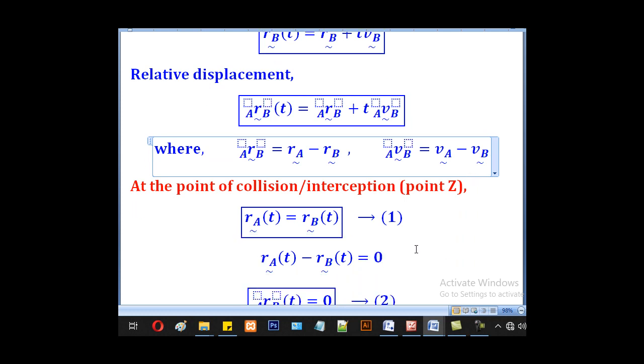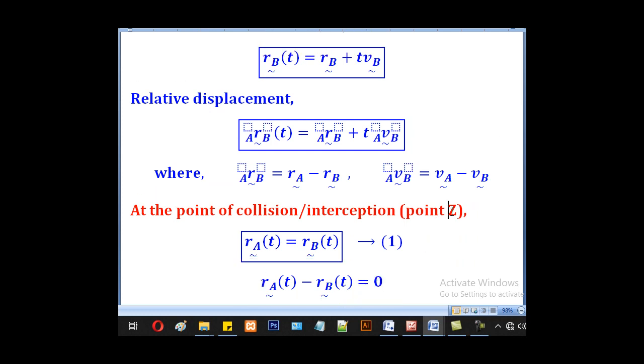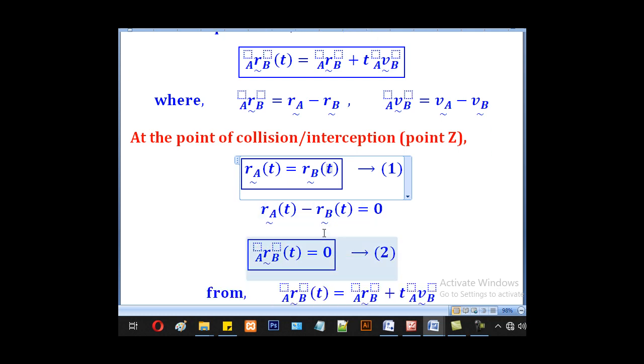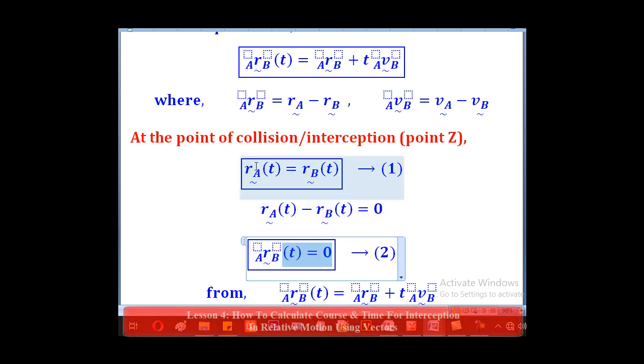Now, at the point of collision, they will all be at point Z. Meaning their position vectors will be the same. Therefore, RA after time T will equal RB at time T. That will be the condition for interception to occur or collision. So if we take everything on one side, we shall get RA(T) minus RB(T) equal to 0. And we know this is the same as relative displacement at time T. So we have now got the second condition for interception.